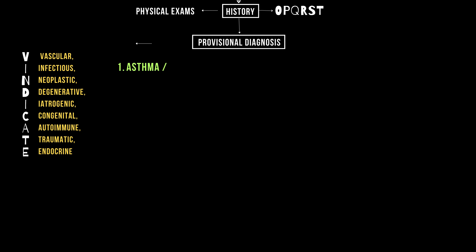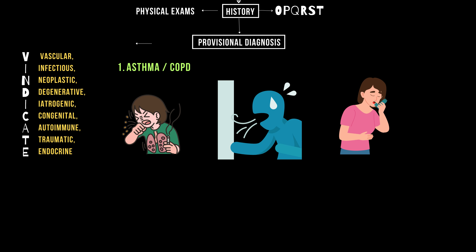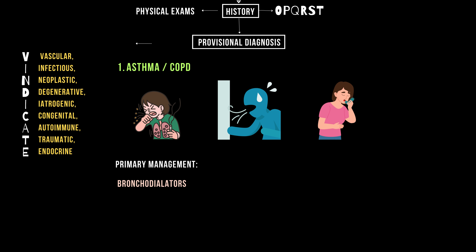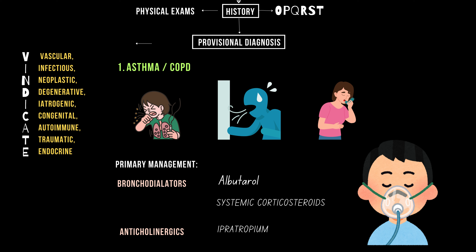First, asthma or COPD exacerbation. Look for a history of respiratory diseases — patients will often have wheezing and difficulty exhaling. Here, we administer bronchodilators like albuterol, systemic corticosteroids, and anticholinergics such as ipratropium. Oxygen therapy and continuous monitoring are crucial too.